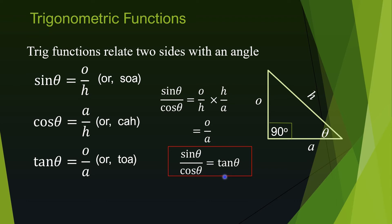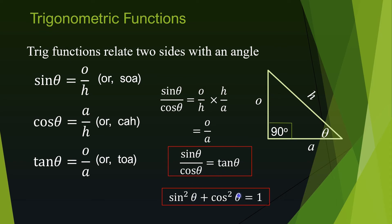There is another famous identity: sine squared theta plus cosine squared theta equals one. To prove it, replace sine theta with o over h, so it becomes o² over h². Similarly, cosine squared becomes a² over h². Adding those two fractions gives (o² + a²) over h², which equals one by the Pythagorean theorem.